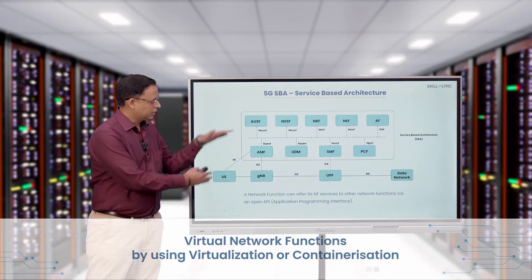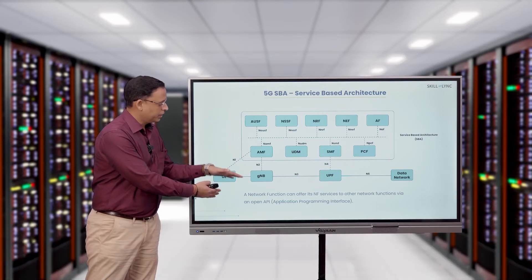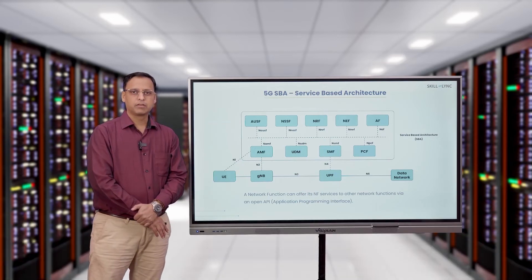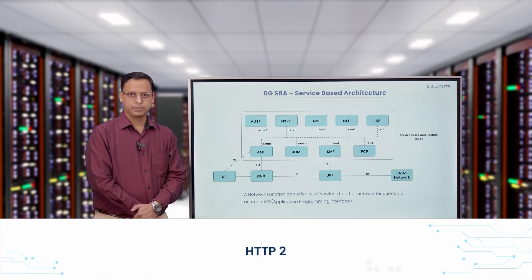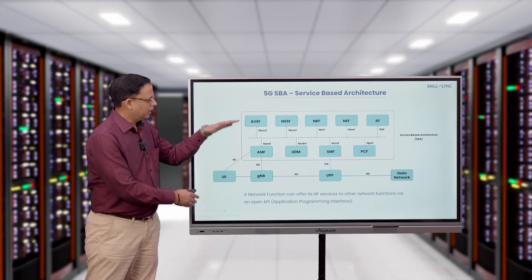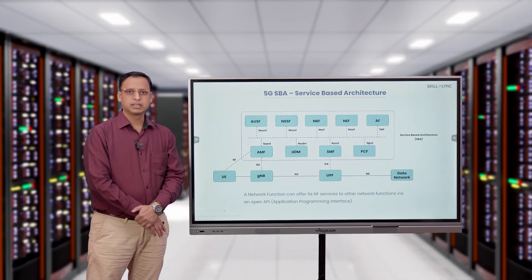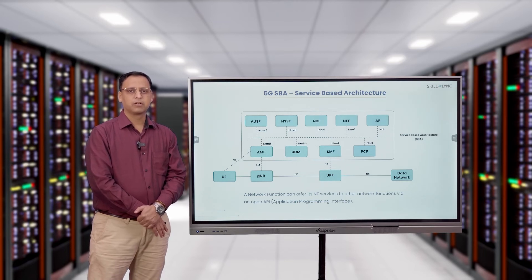All these network functions communicate with each other by using network services over RESTful API communication and protocols like HTTP2. When any network function wants to communicate with another, it typically uses HTTP methods and communicates by using API calls.